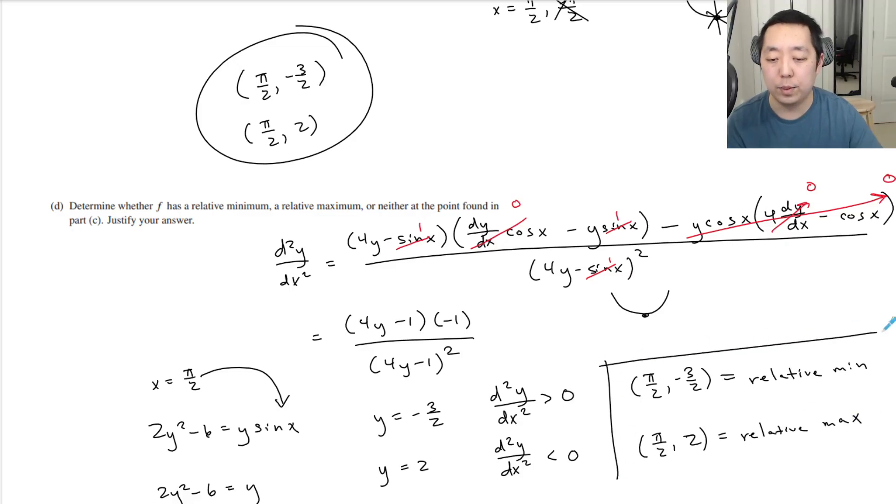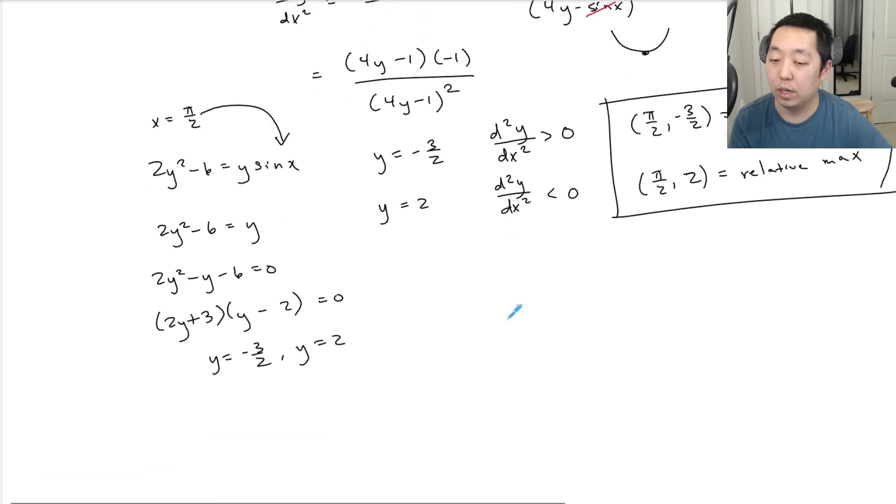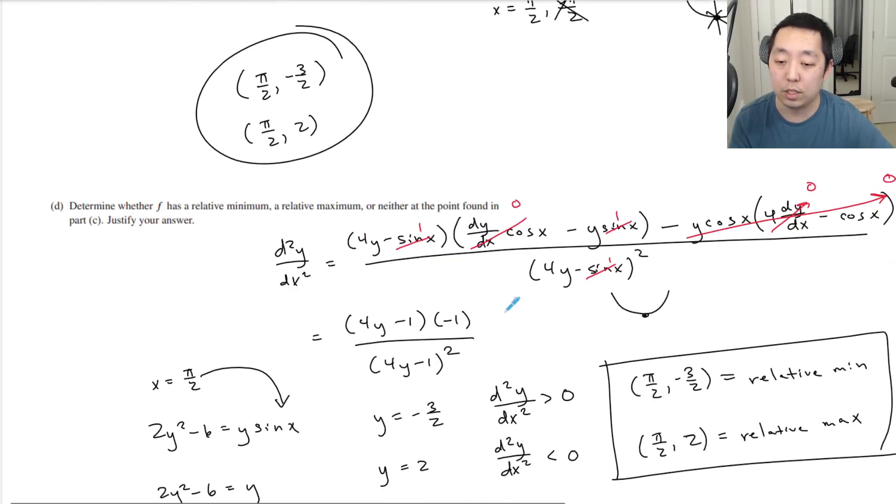Had either of the second derivatives been zero, the test would have failed. You could not claim it was neither. And we would have to have attempted to do a different technique that probably would have been far more annoying to do. But yeah, I think I did those computations right. I know I did them kind of fast. I would check over them, but I was trying to get these done.